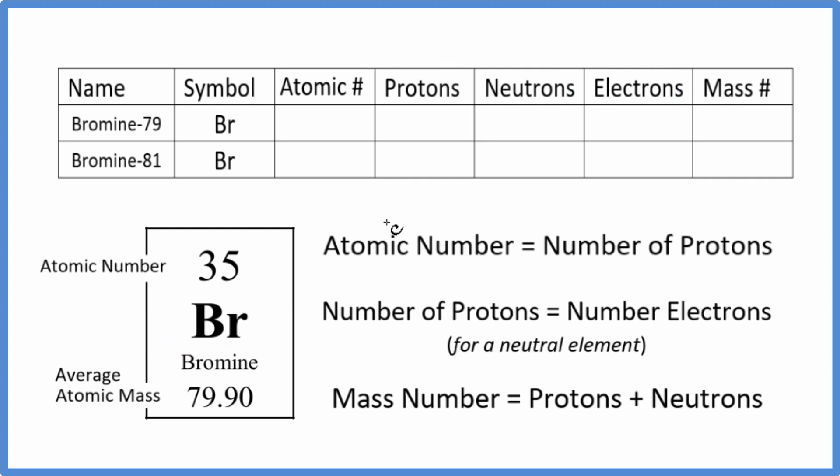For bromine, there are two major isotopes: bromine-79 and bromine-81. The only difference between isotopes is the neutrons. Because of that, the mass number will be different too. But those are the only things that are different; everything else is the same.